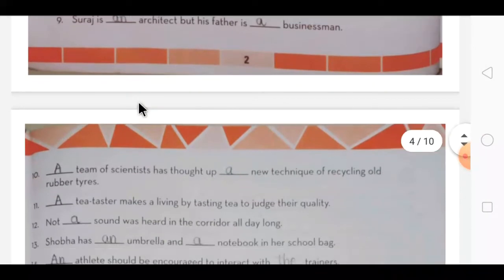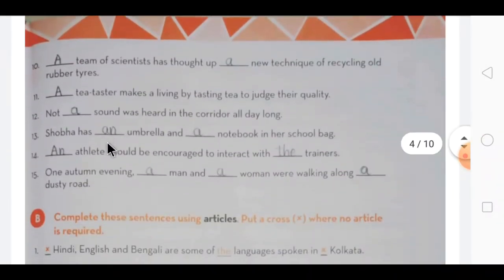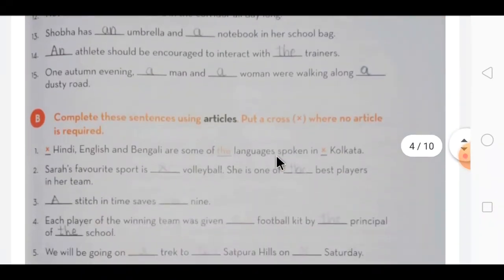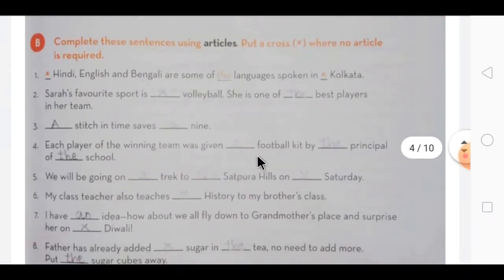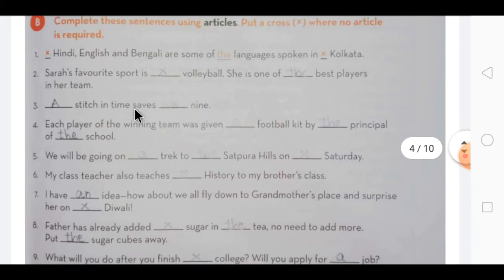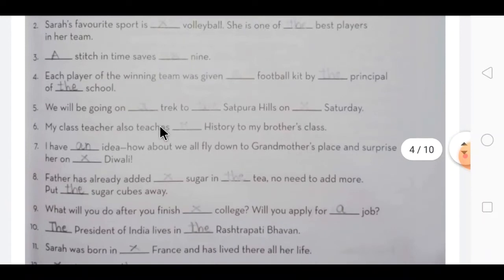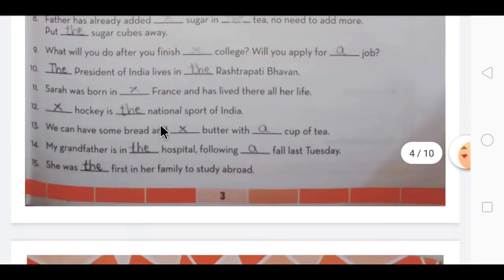So that way you have to complete this exercise. Come to next page also some sentences are there. Where there are vowels, an is used. Where you are talking about something particular, the is used. Now the next exercise.